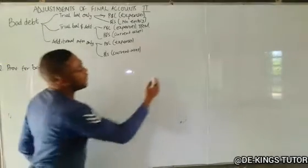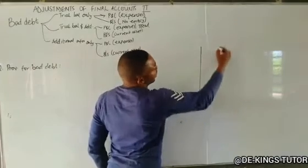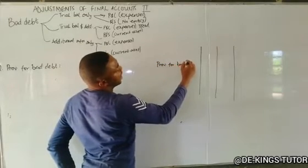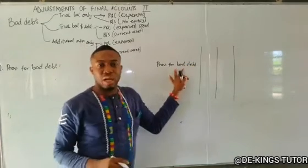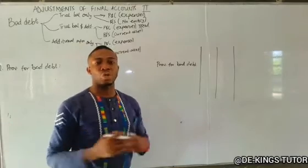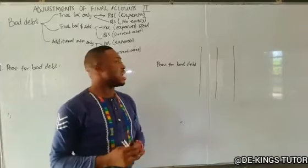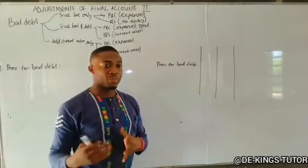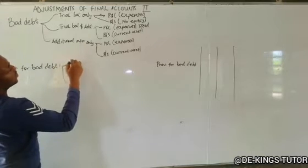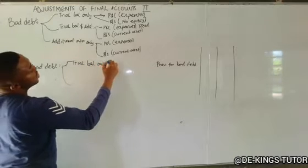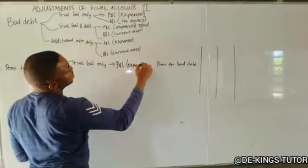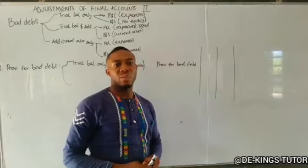Provision for bad debt can occur in different ways. If provision for bad debt appears under the trial balance only, this amount is posted to the debit of the profit or loss account as expenses. Because this has occurred before, there is no need to post it to the balance sheet. So if it appears under the trial balance only, post it to profit or loss as expenses — that's all.